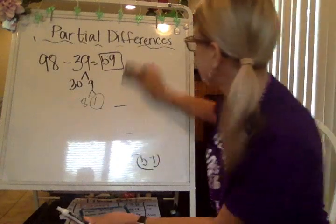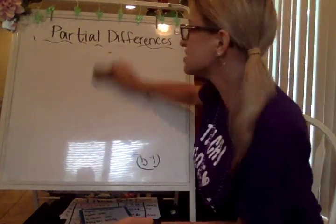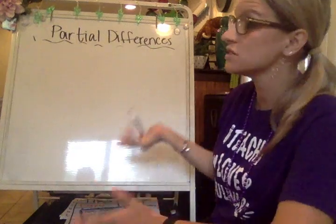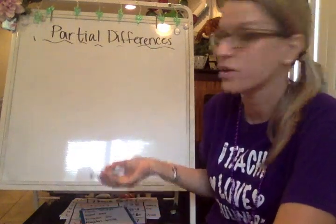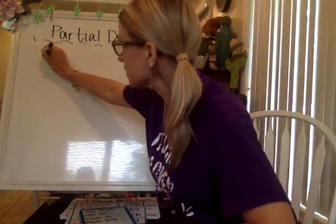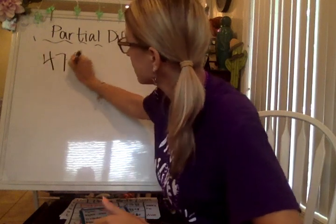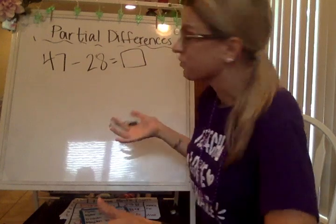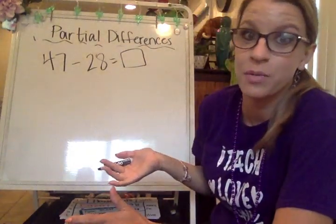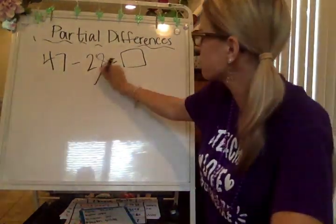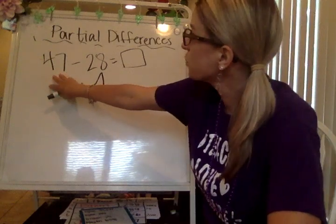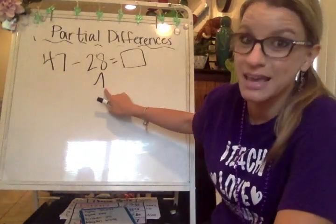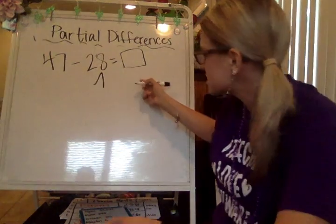Let me do another one. This is all with partial differences, and because I'm doing these as two-digit numbers, that's something you should already be familiar with. Regrouping seems to be the ones that are a little bit more confusing, so I want to make sure I give you enough options for that. So 47 minus 28 — I went ahead and put this underneath here because I'm going to break it apart to do the partial differences.